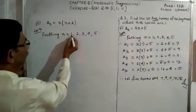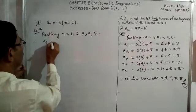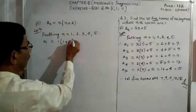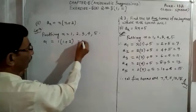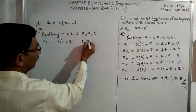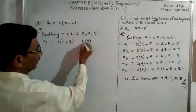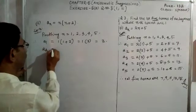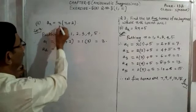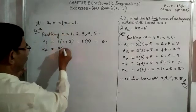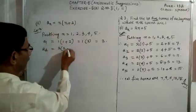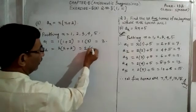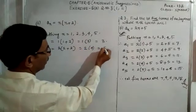When n is equal to 1, a₁ = 1(1 + 2). First work the bracket: 1 + 2 is 3, then 1 into 3 is 3. And when n is equal to 2, a₂ = 2(2 + 2). Work the bracket: 2 + 2 is 4, then 2 into 4 is 8.